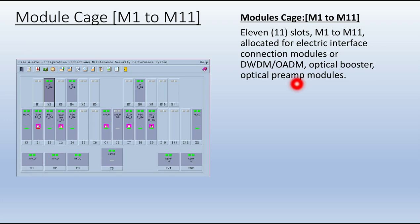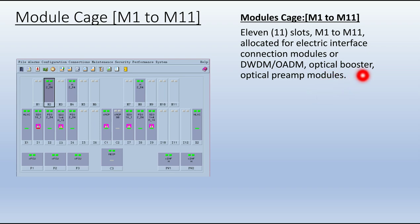The module cage slots M1 to M11 — 11 slots — are allocated for the electrical interface connection modules. These modules are used for DWDM or OADM, and also support optical booster and pre-amplifier modules.